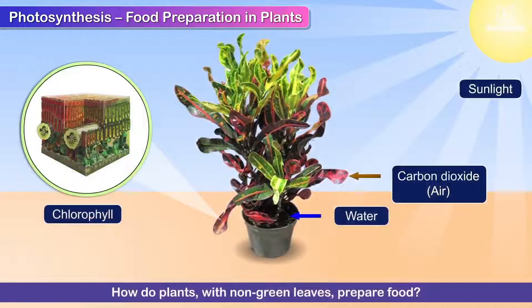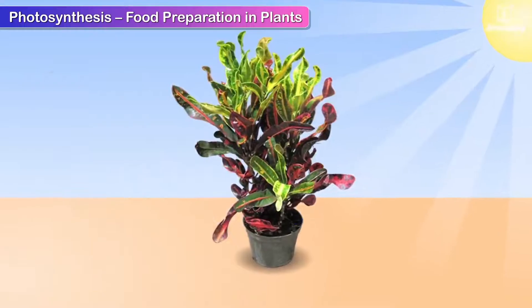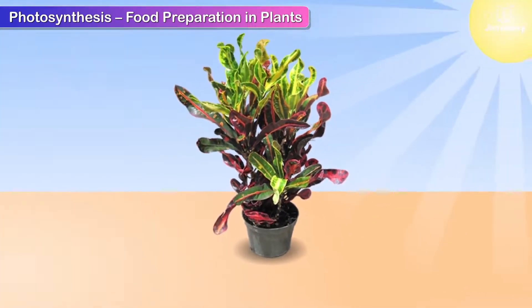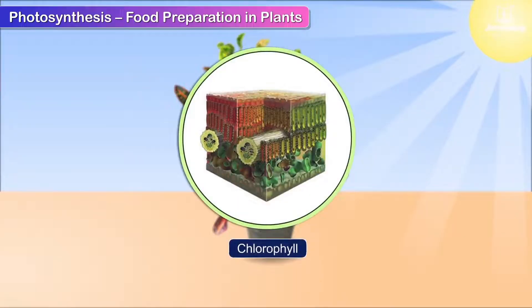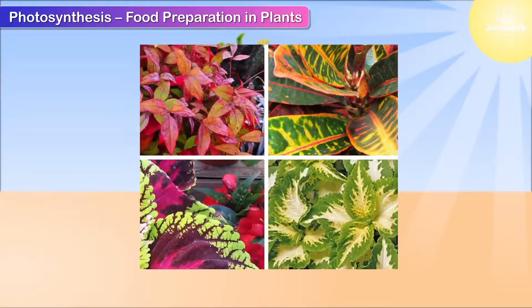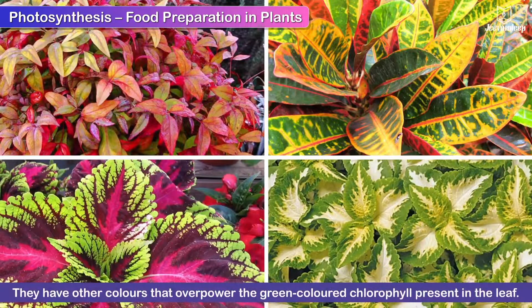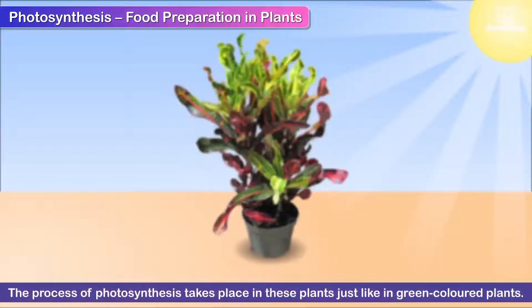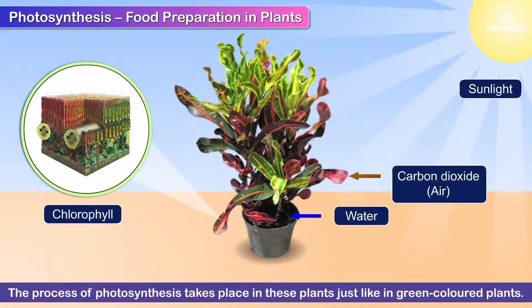How do plants with non-green leaves prepare food? Some plants do not have green-coloured leaves, but this does not mean that they do not have chlorophyll. They have other colours that overpower the green-coloured chlorophyll present in the leaf. The process of photosynthesis takes place in these plants just like in green-coloured plants.